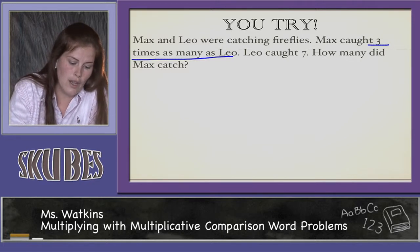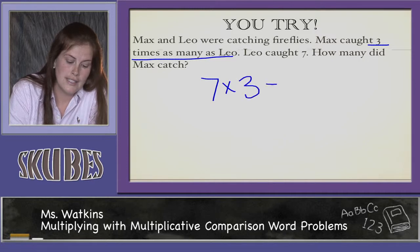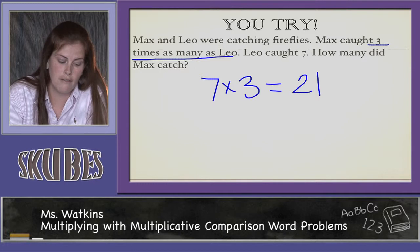So we know Leo caught 7 and Max caught 3 times this number. 7 times 3 equals 21. So Max caught 21 fireflies.